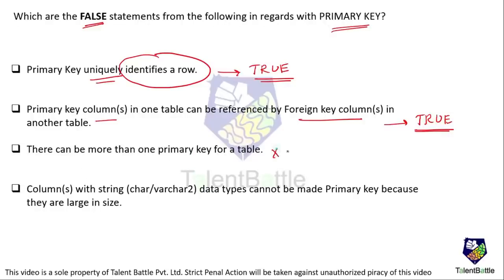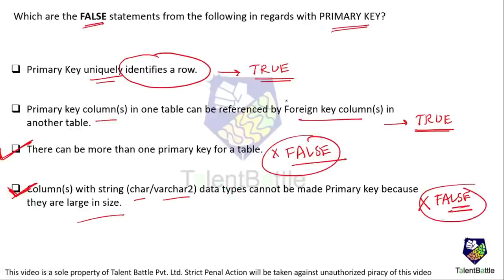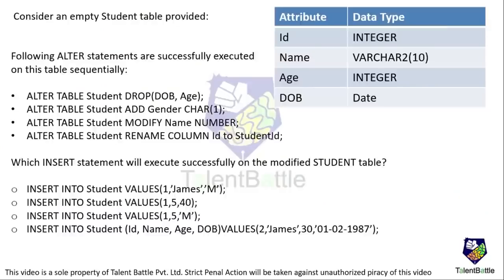Statement 3: there can be more than one primary key for a table — this is false, a table can only have one primary key. Statement 4: columns with string data types CHAR or VARCHAR cannot be made a primary key because of their large size — this is also false, because CHAR and VARCHAR columns can be used as primary keys when required. The false statements are options 3 and 4.